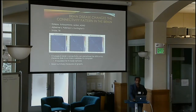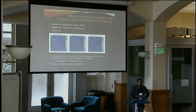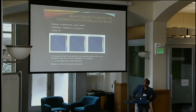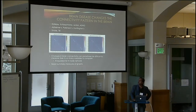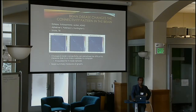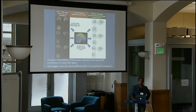The first thing to know about these connectomes is that disease changes these patterns. Here's an example in temporal lobe epilepsy — it may be impossible to see the differences visually, but small differences in the connectivity matrix can have a pretty large impact on what disease does to the brain. One of the first things we want to do is use graph models to model how disease affects the brain.